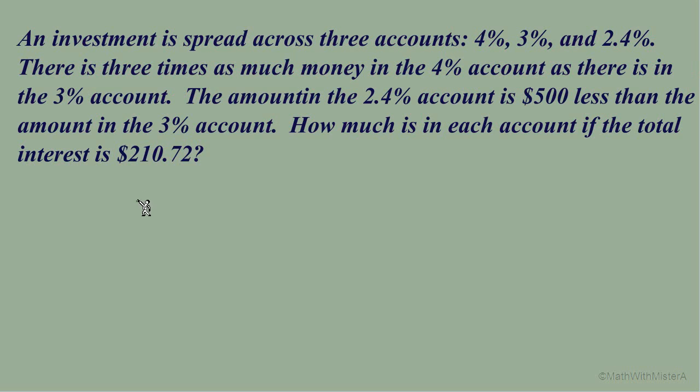Here's one last example of an investment problem. You can pause the video to try this one, and now we'll go through the answer together. It's a little bit different because we have three accounts, but we can take the same approach. Each term is one account that has a principal and an interest rate. We have three accounts this time. The first one has an interest rate of 4%. The second one is 3%. The last is 2.4%. And we have a total interest, $210.72.